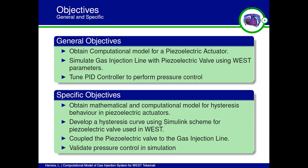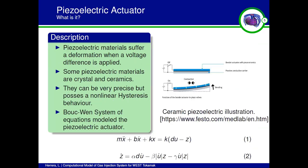We also needed to validate the simulation and contrast it with the actual campaign running of the WEST automatic data. The piezoelectric actuator is the valve that allows the passive gas into the vacuum chamber. A piezoelectric is a material that when an electric field is applied, it suffers some bending, and this can be measured very accurately. The problem is it poses a non-linear, hysteresis behavior. To model this behavior, I used what's called a Bouc-Wen system of equations that models hysteresis behavior.